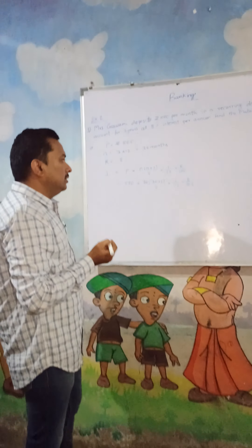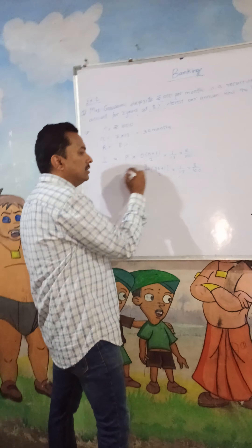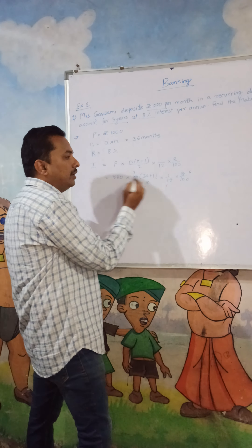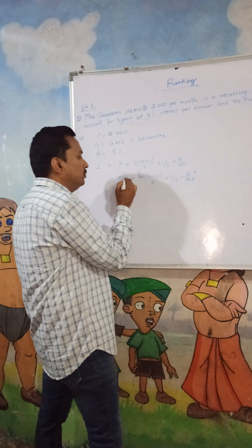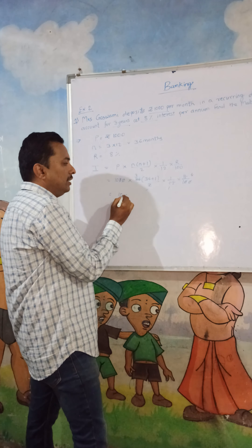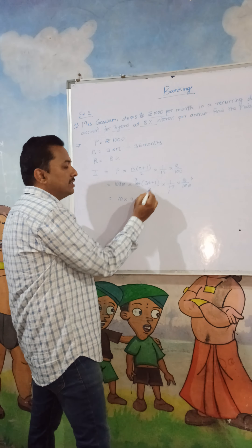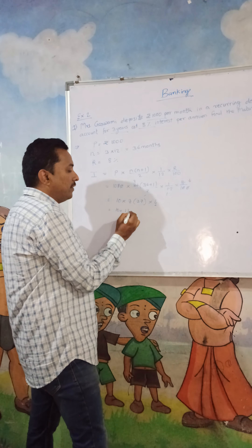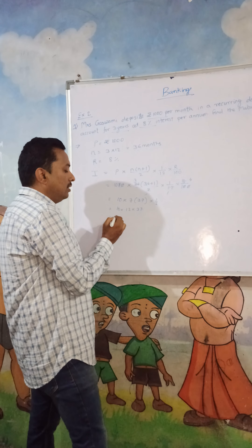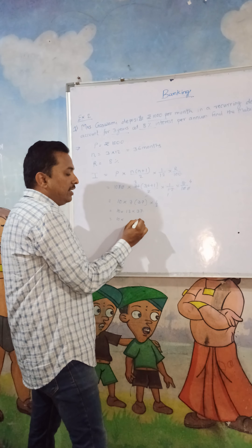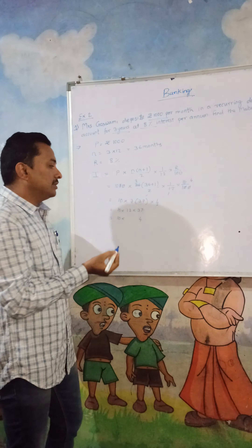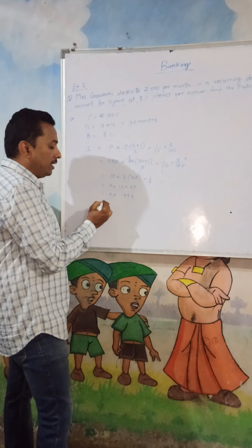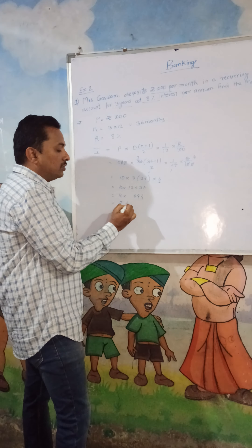Now let us simplify. We cancel 12 from the denominator, and 2 from the denominator, and cancel zeros between 1000 and 100. This gives us 10 × 3 × (36+1) × 4, that is 10 × 3 × 37 × 4. Multiplying: 3 into 4 is 12, into 37 gives 84 then 444, so the interest is rupees 4440.